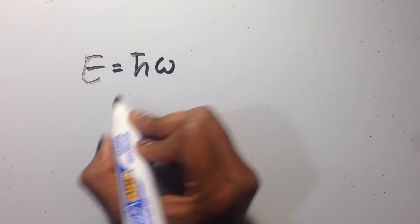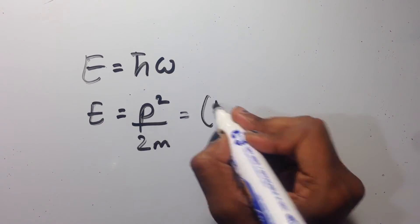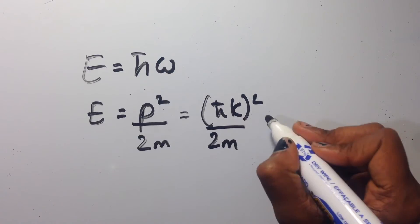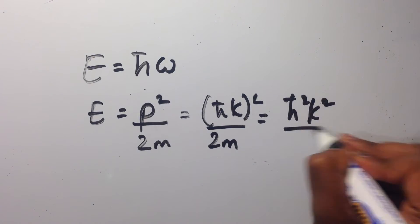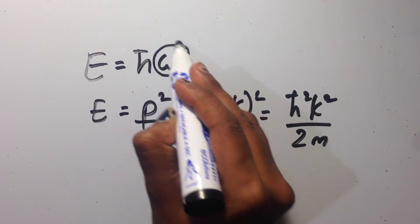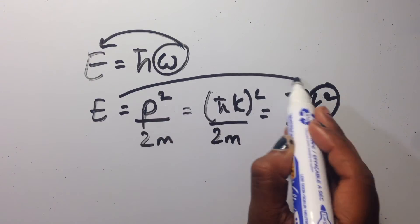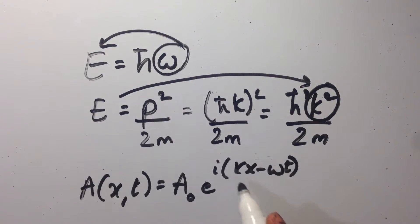To be able to satisfy both equations, I will try and look at the relationship between energy and omega and energy and k. We can see that the energy is proportional to omega, whereas in the other case the energy is proportional to k squared. This means that we differentiate twice with respect to x but only once with respect to time.